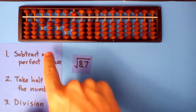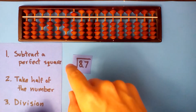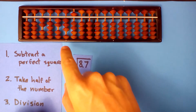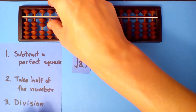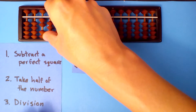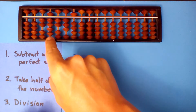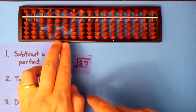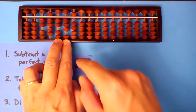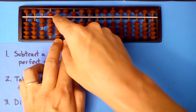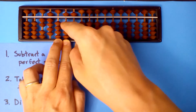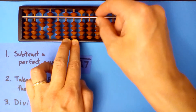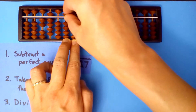Divide this number into this one. 2 goes into 23 eleven times, but 2.9 only goes in 9 times. So we'll do that. Multiply and subtract: 9 times 2 is 18, 9 times itself is 81. So we subtract 40.5.